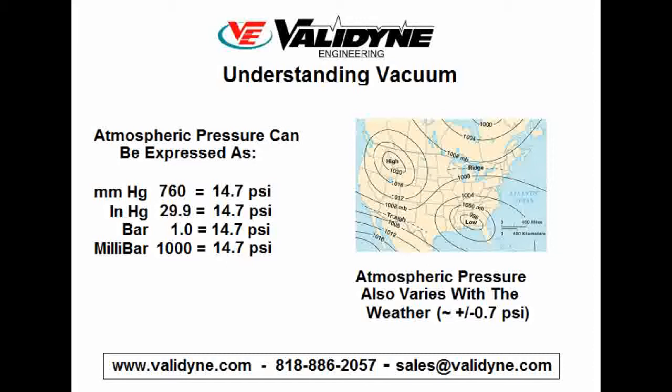This helped to standardize weather forecasting around the world and made small variations in the atmosphere easier to record. As Torricelli noted, the atmospheric pressure is affected by the weather. Lines of equal pressure in millibars are plotted on a weather map to reveal how the atmosphere is affected by weather patterns. In fact, extremes in weather can produce a change in atmospheric pressure on the order of plus or minus 0.7 psi. This means that in order to correctly measure a vacuum, you have to know the local atmospheric pressure and understand that it will be affected by elevation and weather patterns.